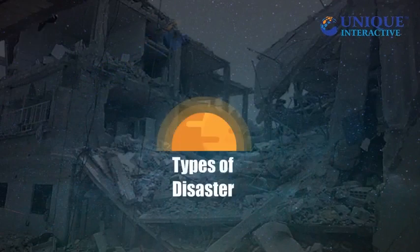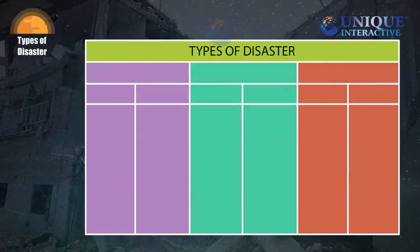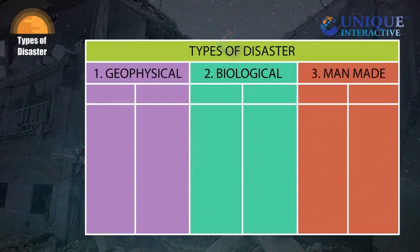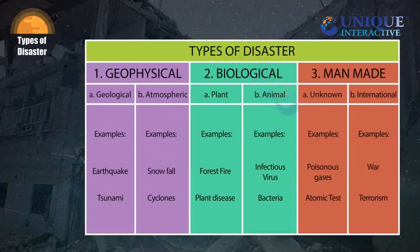Types of Disaster. The different types of disaster that we might come across are classified into three groups: 1. Geophysical, 2. Biological, 3. Man-made. Geophysical is further subdivided into Geological — example: earthquake, tsunami, etc. — and Atmospheric — example: snowfall, cyclone, etc. Biological is further subdivided into Plant — example: forest fire, plant diseases, etc. — and Animals — example: infectious virus, bacteria, etc. Man-made is further subdivided into Unknown disaster — example: poisonous gas release, atomic test, etc. — and International — example: war, bomb blast, terrorism, etc.